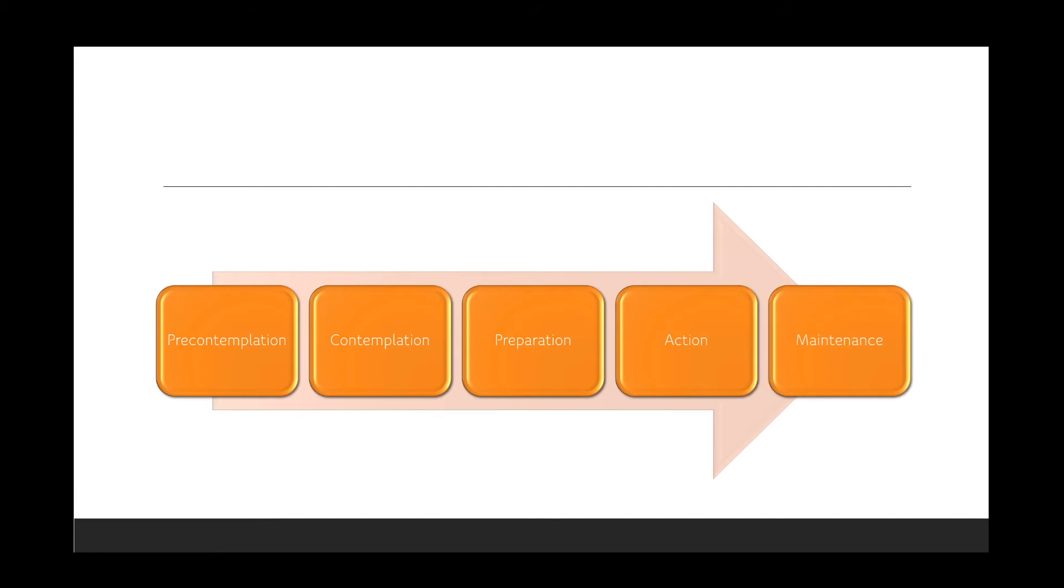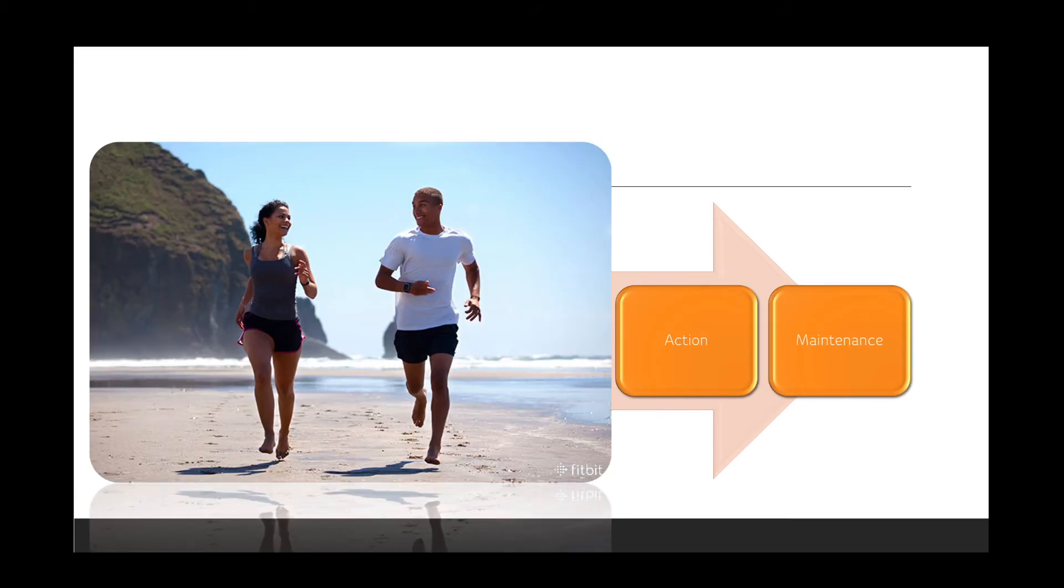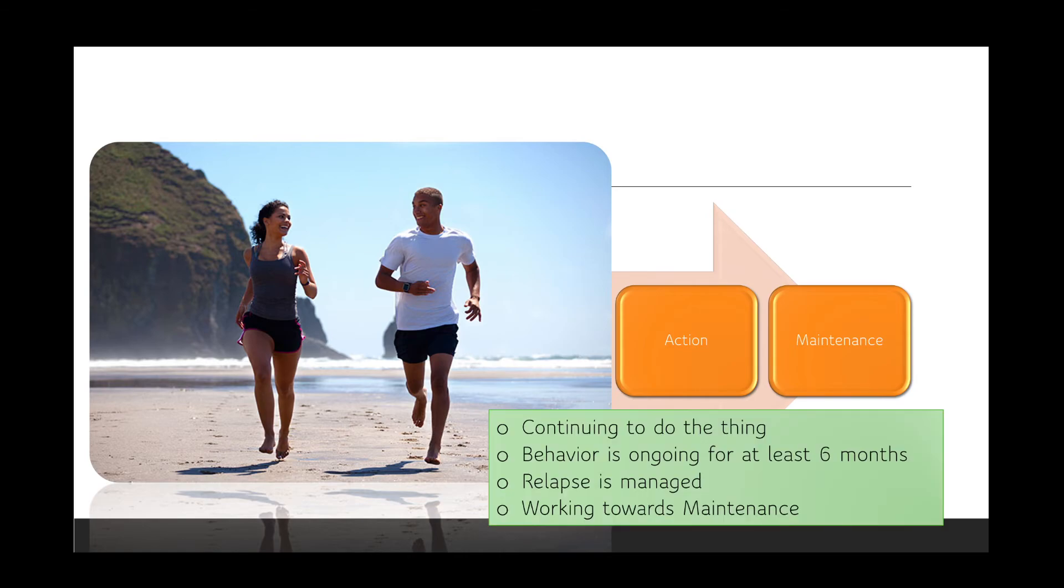In the last phase of this model is when the person is just doing the behavior. They're living the change. Once a person has done something for at least six months is when we say they're in the maintenance phase. They're managing any relapses and working towards the termination phase, which is when the behavioral choice is now just a part of who they are in their daily living.